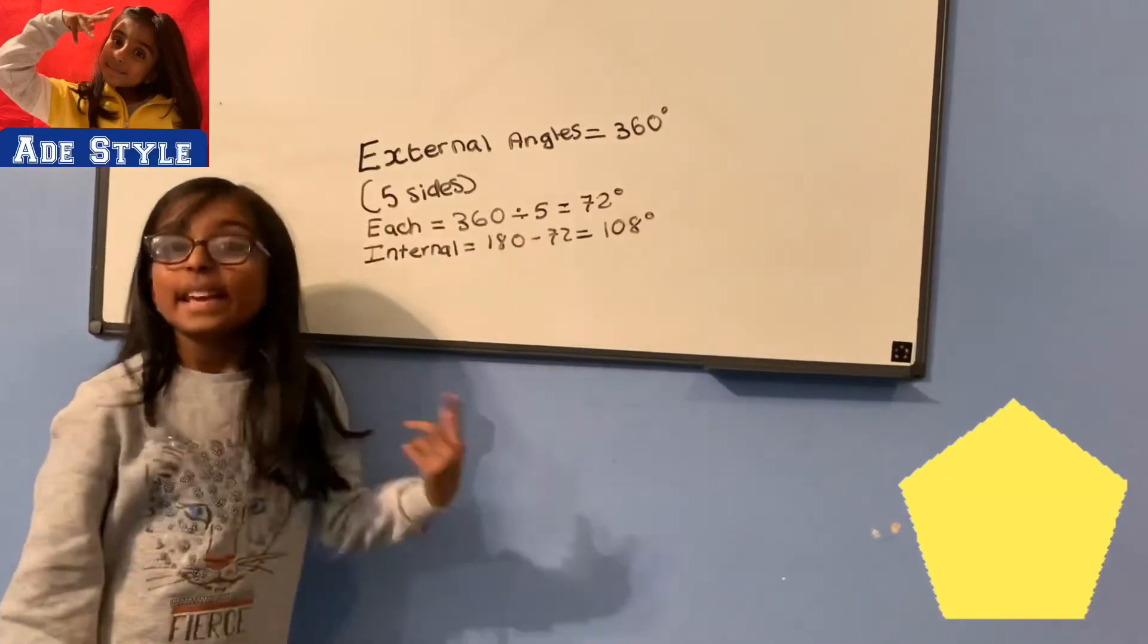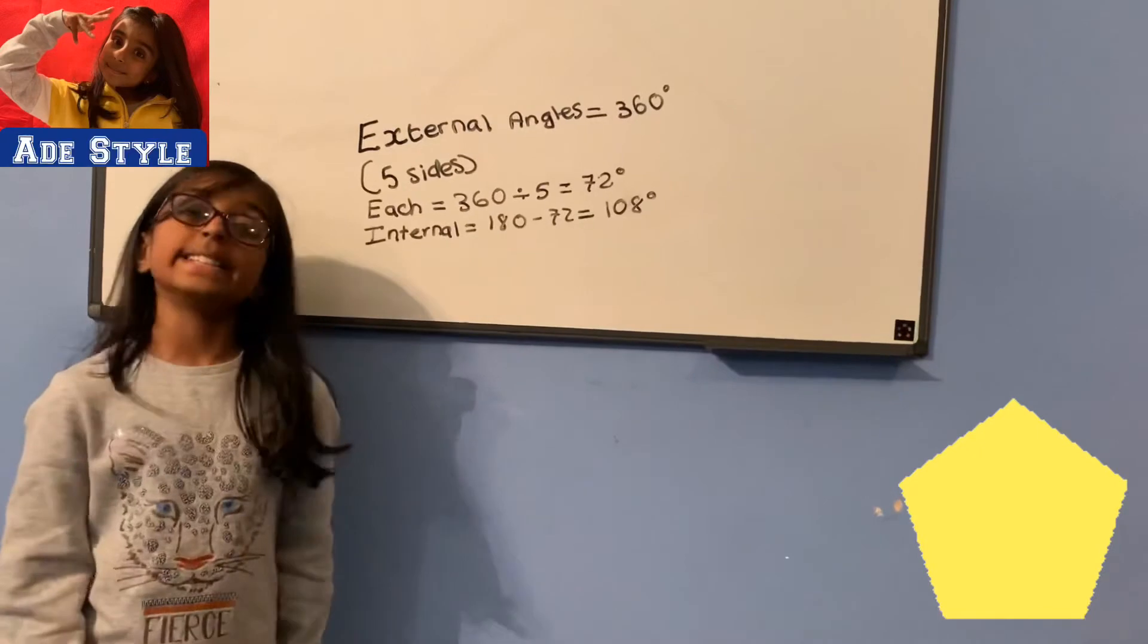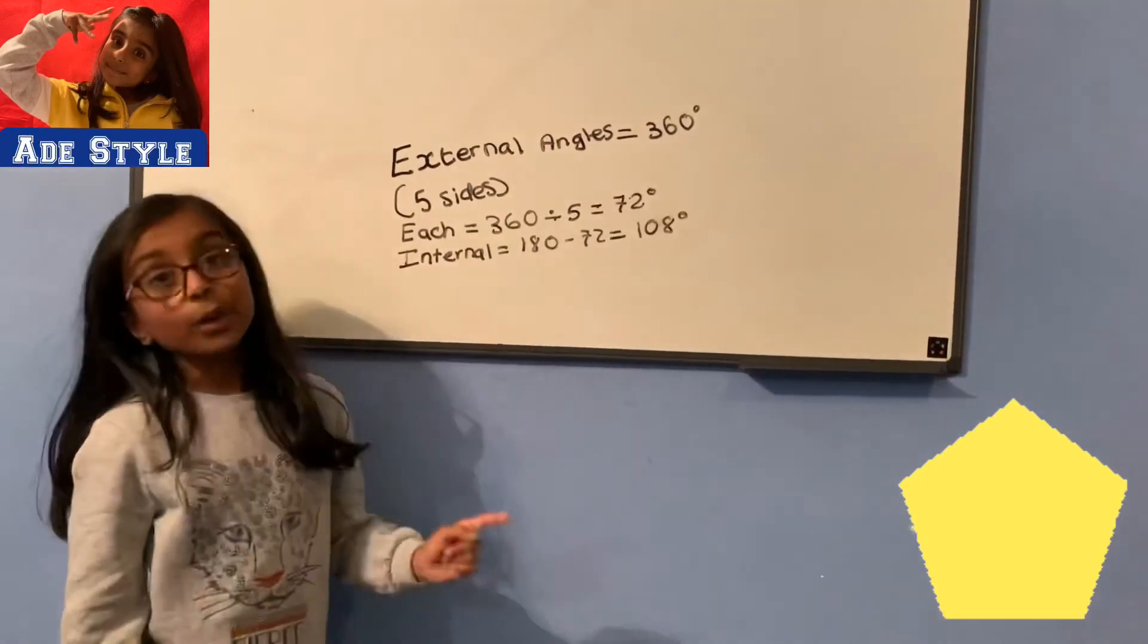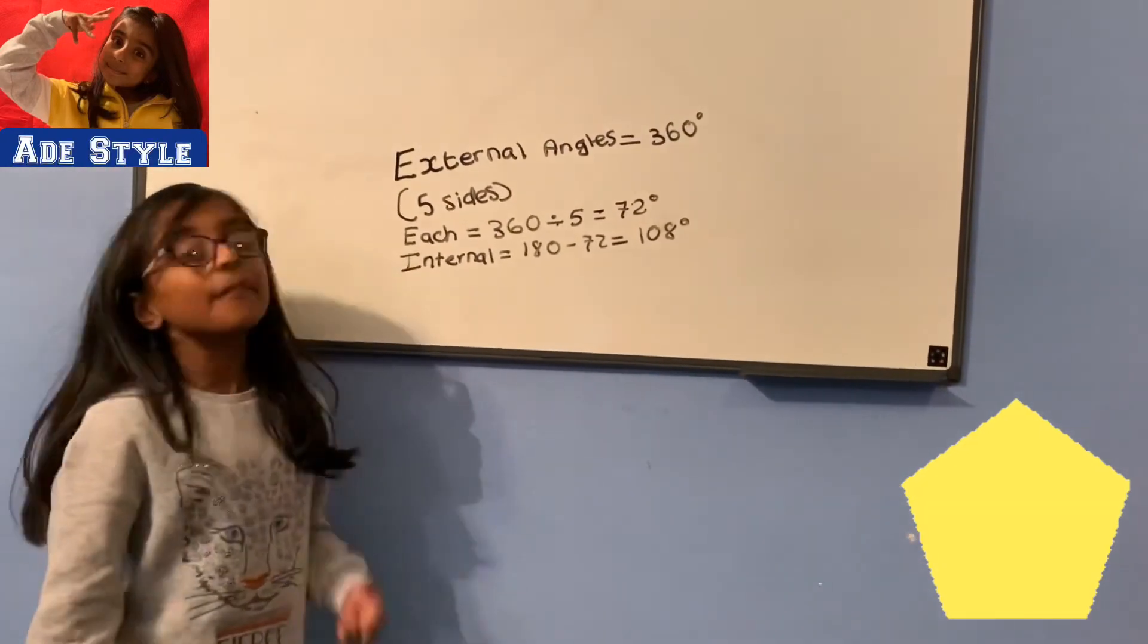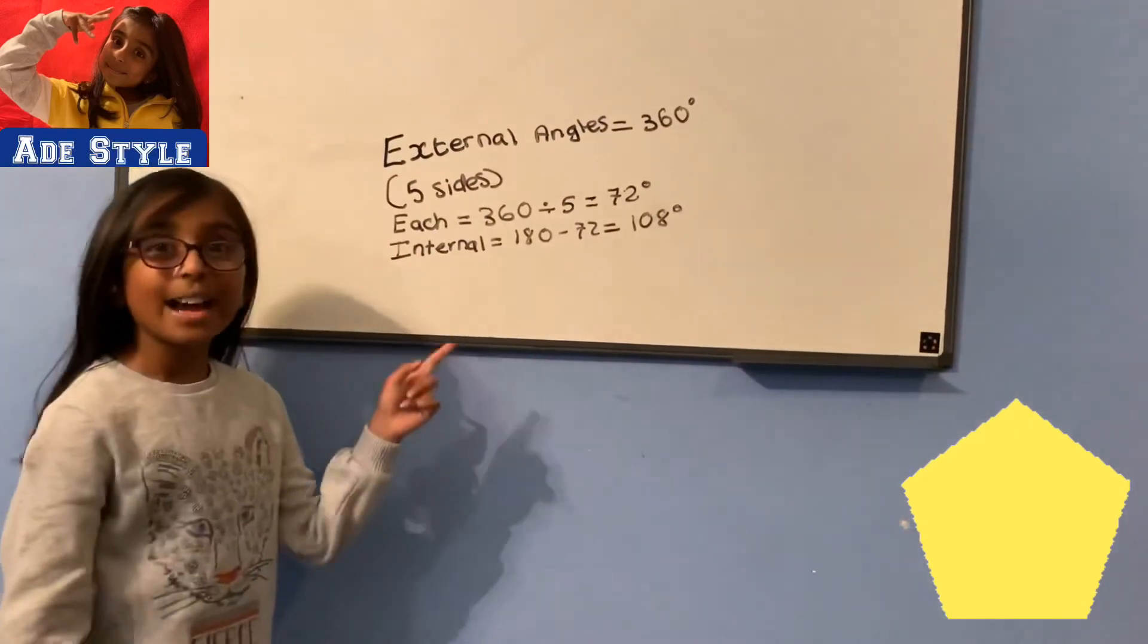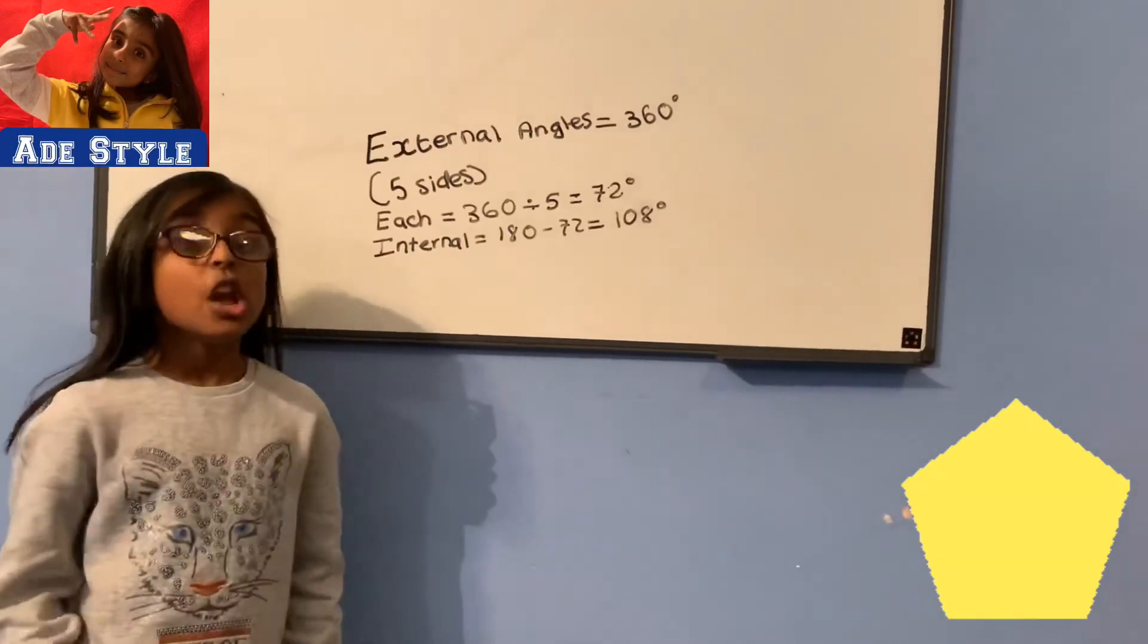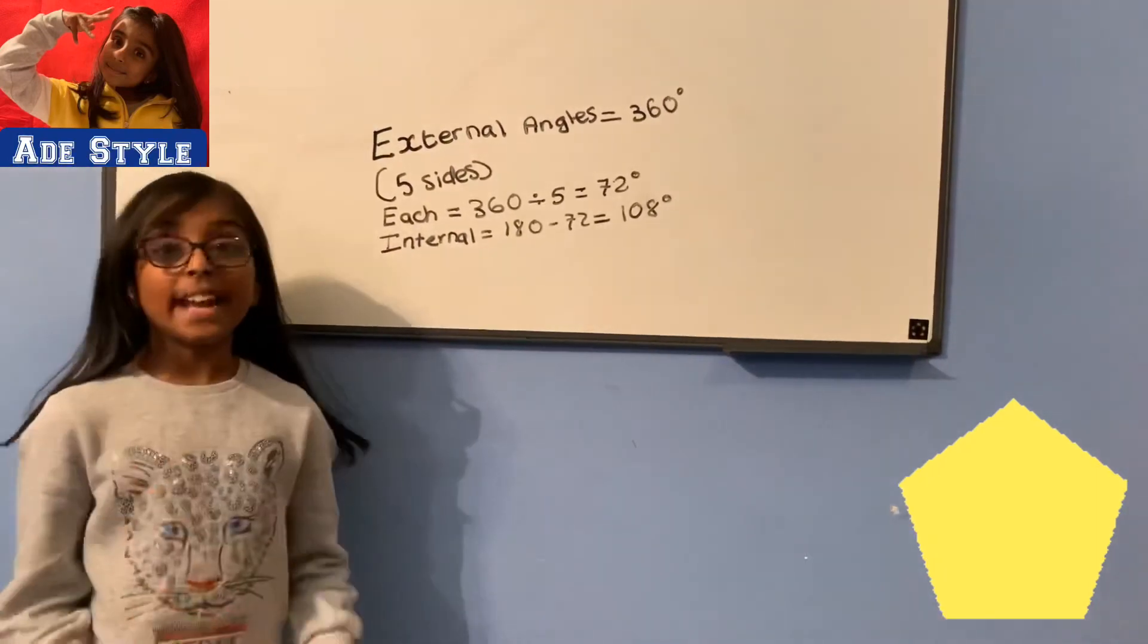External angles equals 360 degrees and there are five sides in a pentagon. Each equal 360 divided by 5 which equals 72 degrees. Now internal angle equals 180 take away 72 which equals 108 degrees.